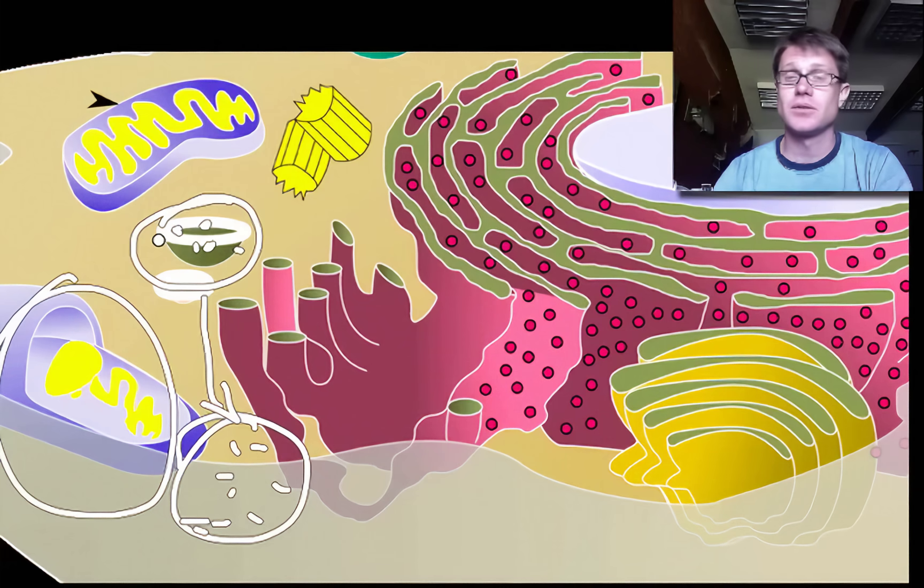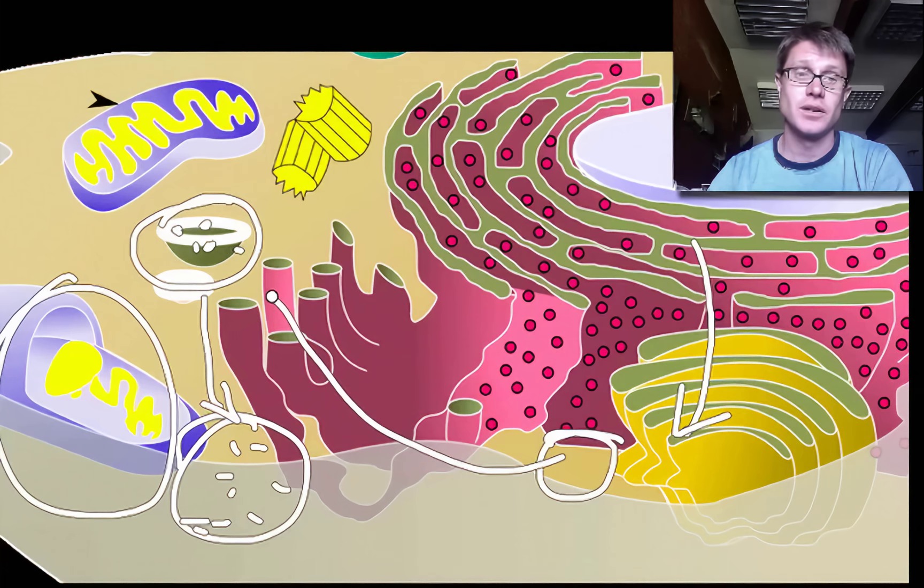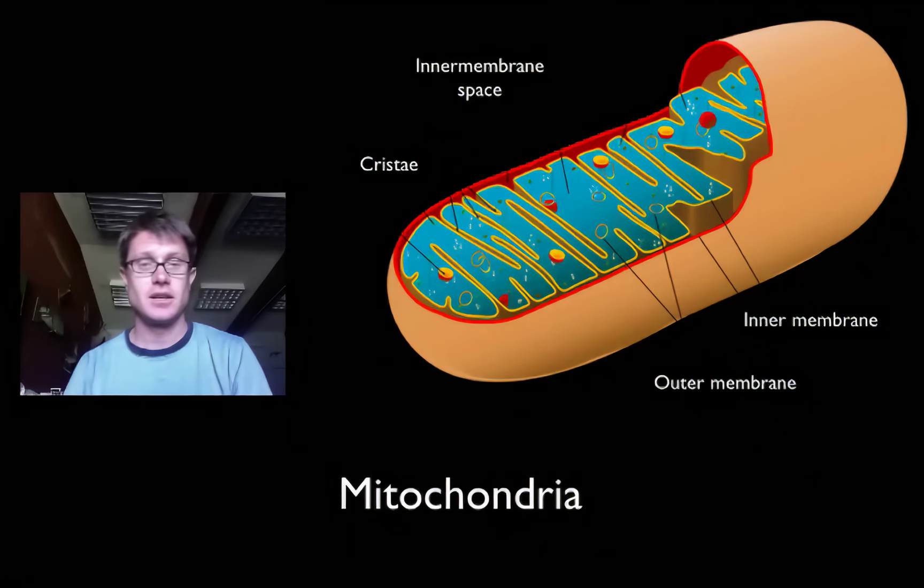So lysosome I refer to as like the suicide sac. It has enzymes. Where did those enzymes come from? Well they came from the ER. They eventually went through the Golgi apparatus and a lysosome was produced. So lysosomes are really important in breaking down material when it's not needed anymore.